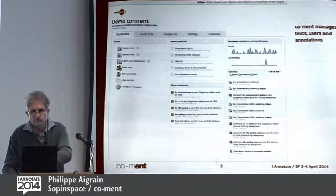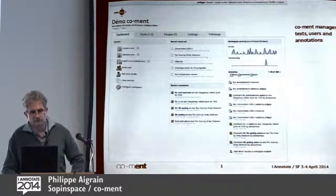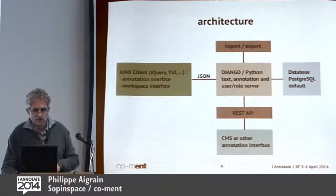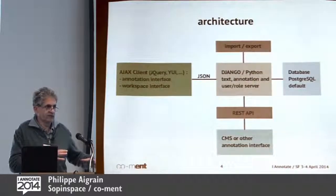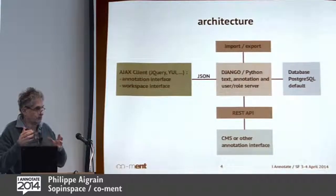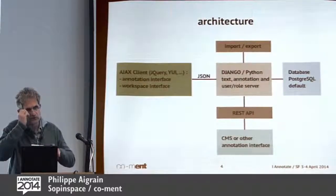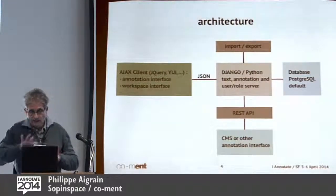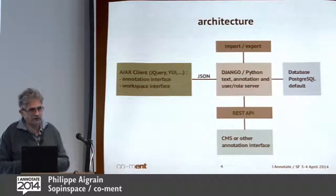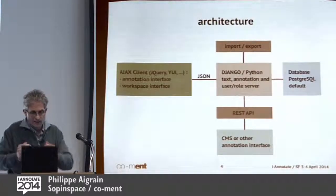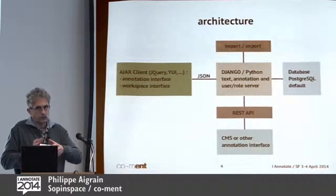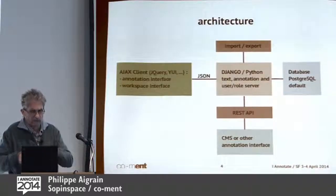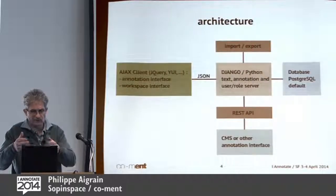This workspace is where a lot of our work happens — the back office of it — with all the features for configuration, settings, follow-up, and dissemination. The architecture is a relatively classical one: we have an Ajax client like all these tools. On the server side, we use the Django framework and Python to manage text, annotation, users, and roles. Our reference database is Postgres. We also have an API that allows Coman functionality to be included in content management systems, including a Drupal client, plus a number of import/export facilities.